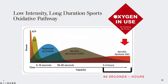Then we shift into anaerobic glycolysis, where we start to use carbohydrates and sugars — glucose — and this is used without oxygen. These two pathways are used without oxygen. Then we shift into aerobic glycolysis, where we're using carbohydrates with oxygen, which means that glucose is going into the mitochondria and producing a lot more ATP than we get anaerobically.